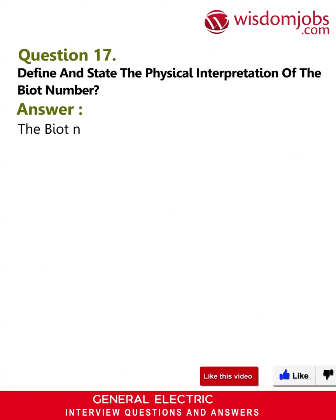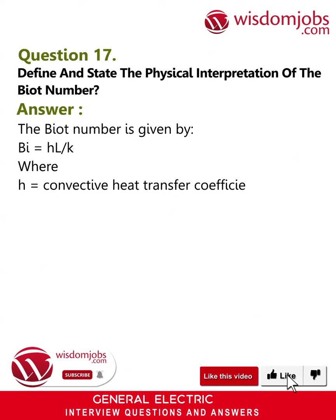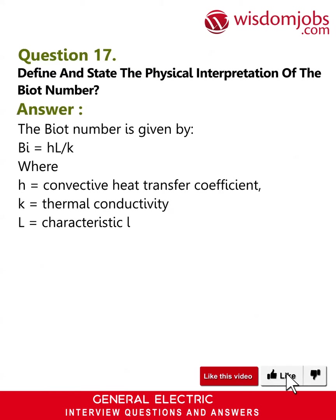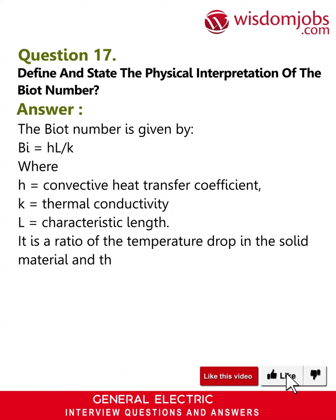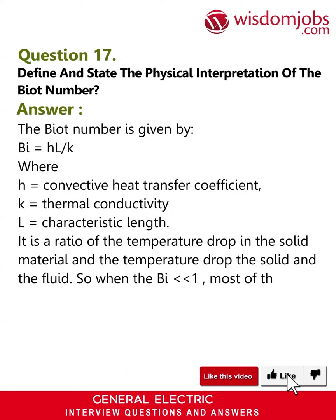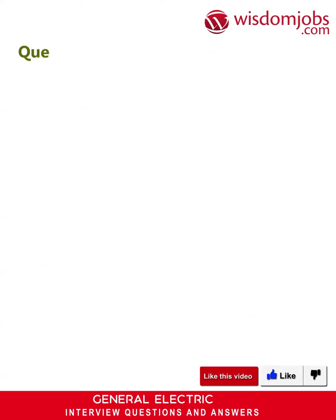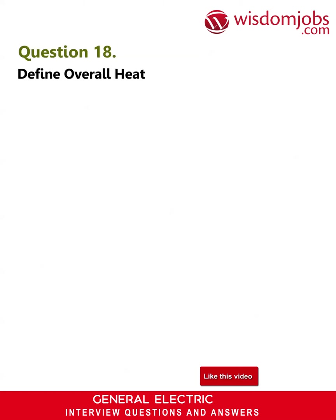Question 17: Define and state the physical interpretation of the Biot number. Answer: The Biot number is given by Bi = hL/k, where h is the convective heat transfer coefficient, k is the thermal conductivity, and L is the characteristic length. It is a ratio of the temperature drop in the solid material to the temperature drop between the solid and the fluid. When Bi << 1, most of the temperature drop is in the fluid and the solid may be considered isothermal.